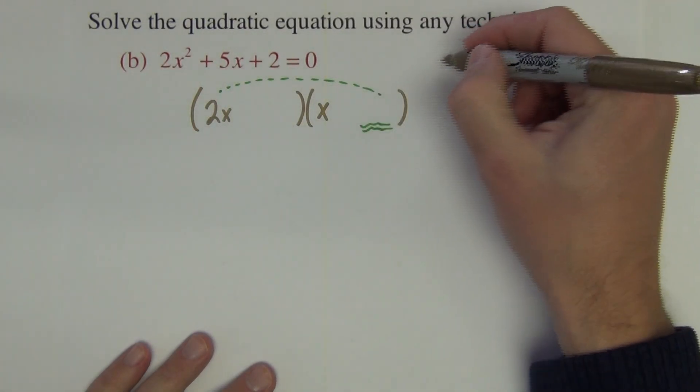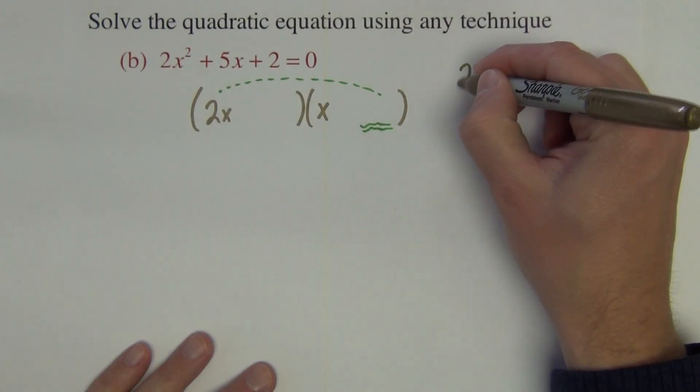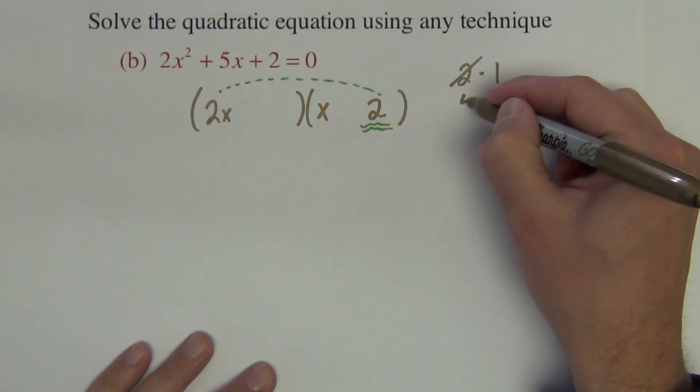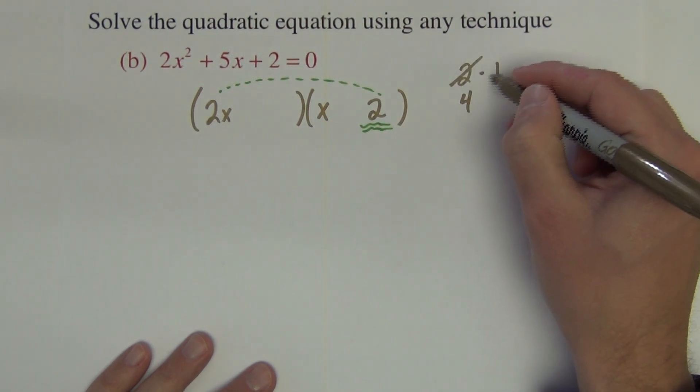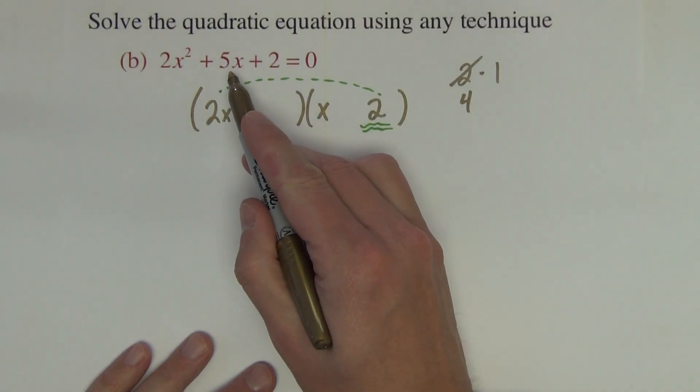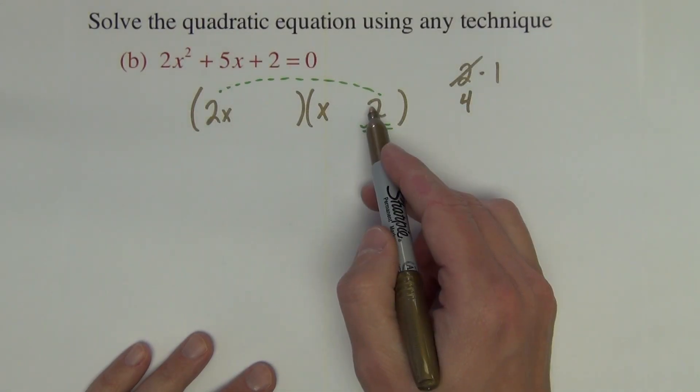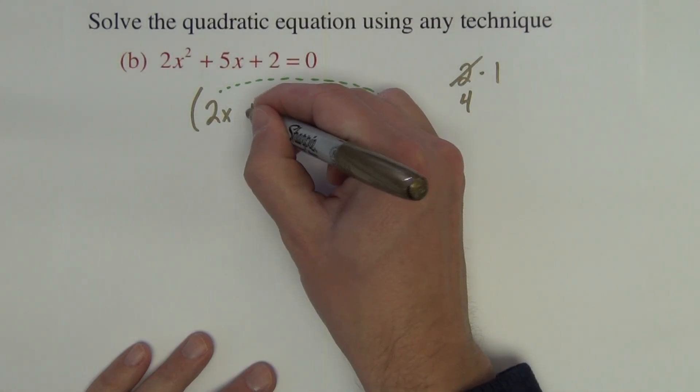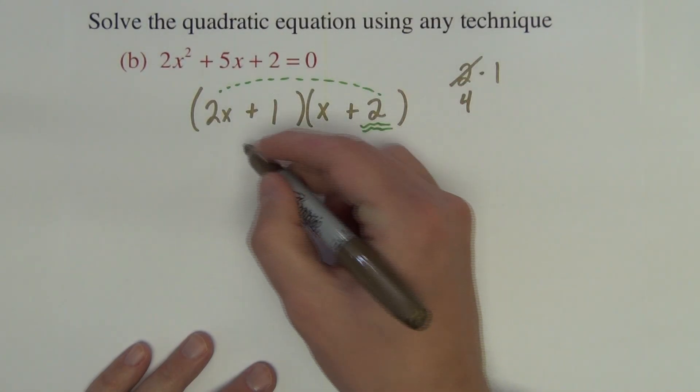So if I'm using 2 times 1, if I place the 2 here, that 2 is really a 4. So now I'm looking at 4 and 1. And do 4 and 1 have a sum of 5? And the answer is yes, they do. So I'm putting the 2 here because it's really a 4. And I'm putting the 1 here, 2x plus 1, x plus 2.